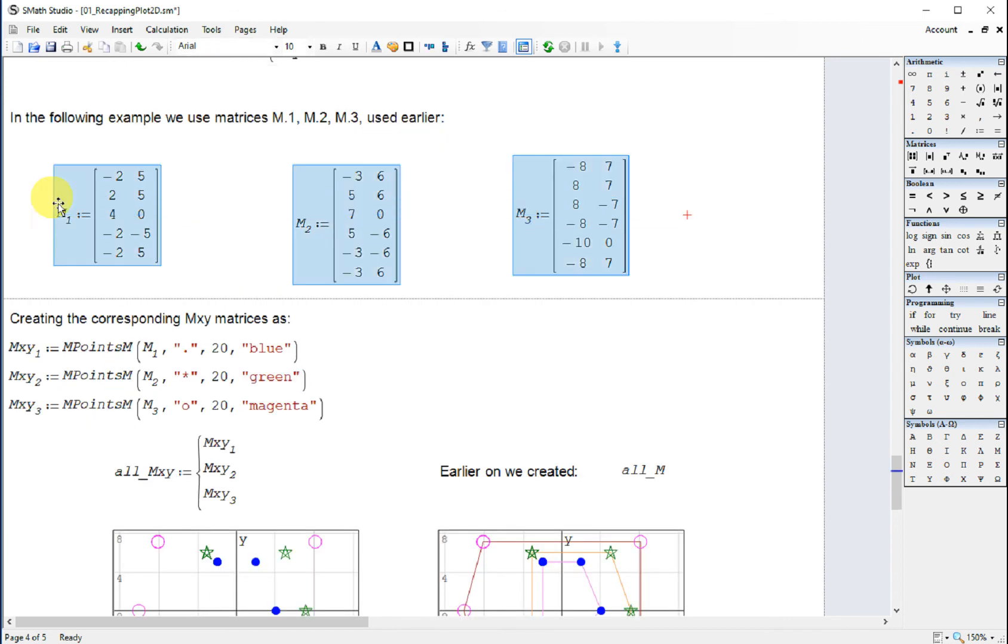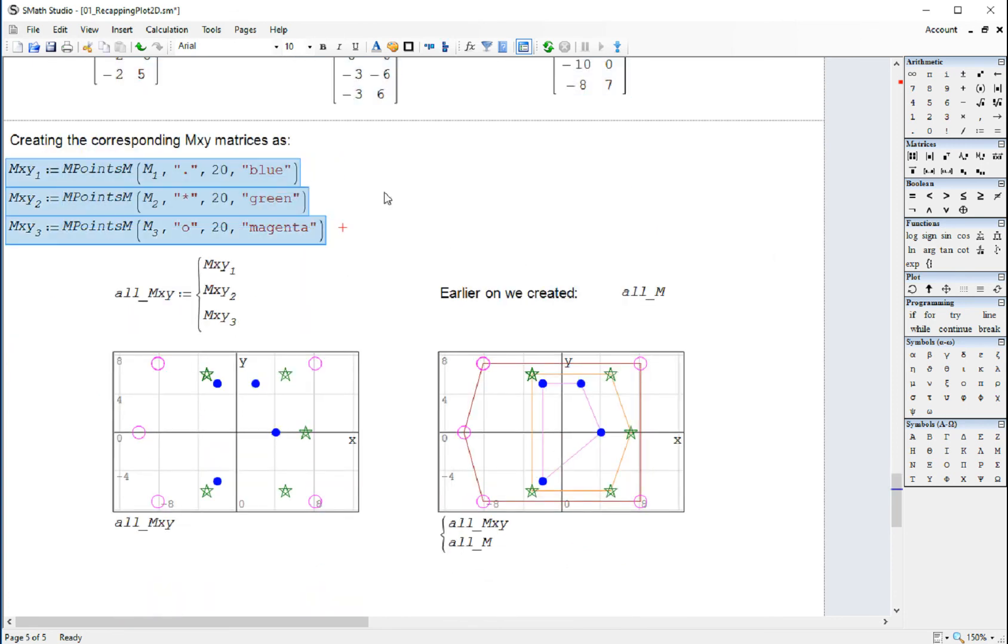You could have three polygons represented by matrices. Create the corresponding matrices called MXY, MXY2, MXY3.